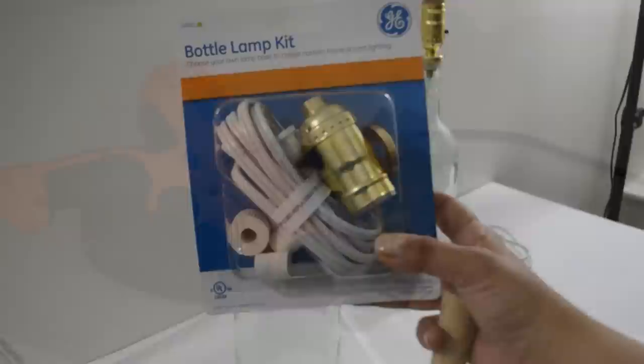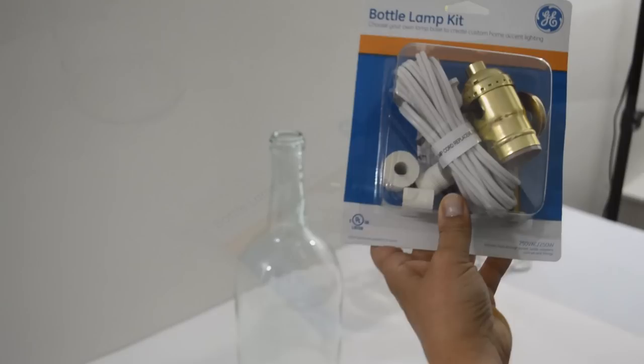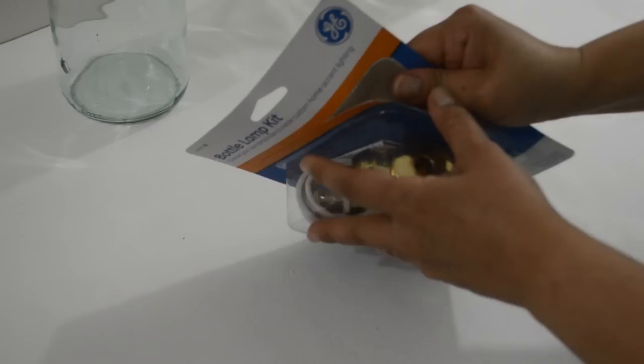Now we can turn the bottle into a lamp. I bought this bottle lamp kit at Walmart and it came with three rubber adapters, but none of them fit snugly, so I used the original cork instead. Open the package and lay out the instructions. I followed the instructions except I used my own adapter.